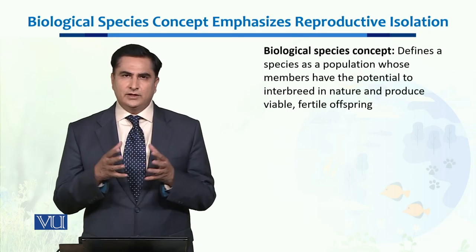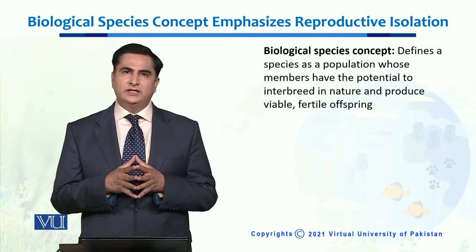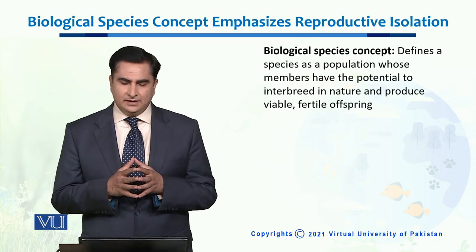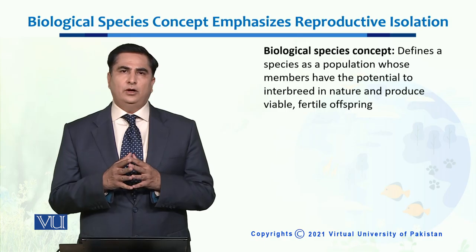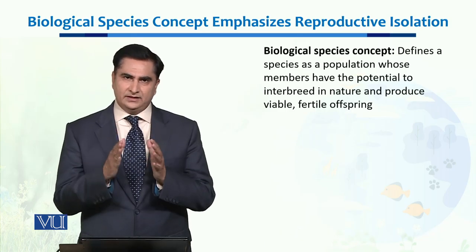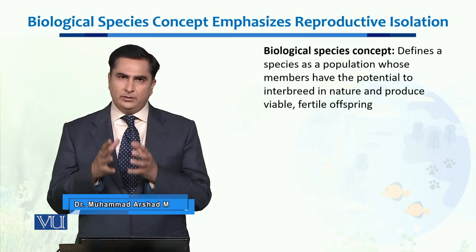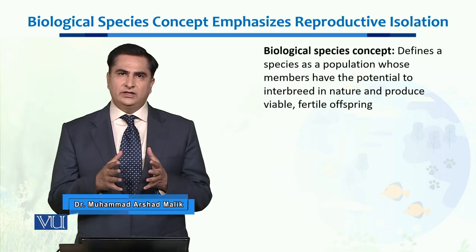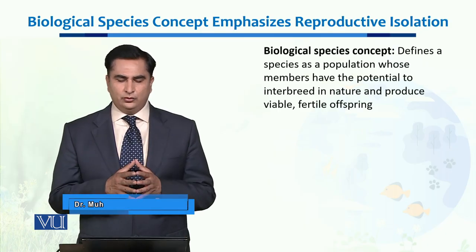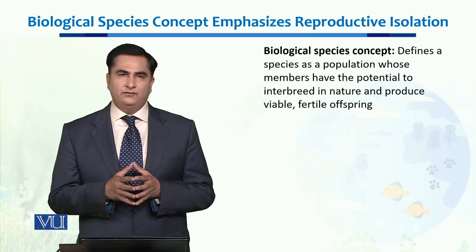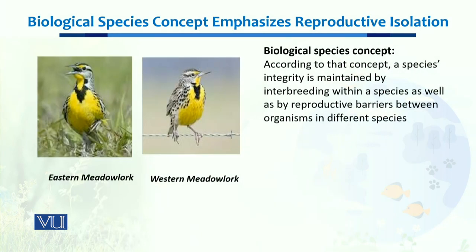Dear students, in this unit we will talk about the biological species concept which emphasizes reproductive isolation. First of all we should know what is a species. A species is a population of similar organisms which have the potential to interbreed in order to produce viable, fertile offsprings. According to this concept, a species' integrity is maintained by interbreeding within the species as well as by reproductive barriers between organisms in different species.